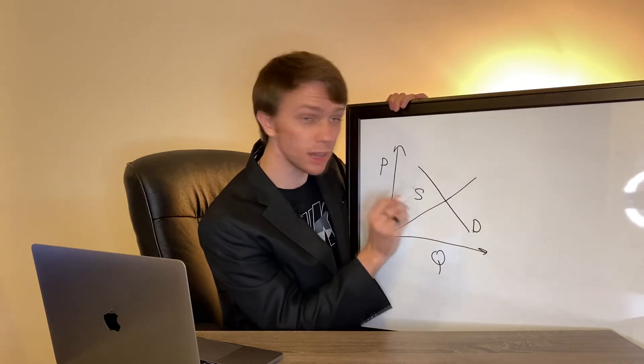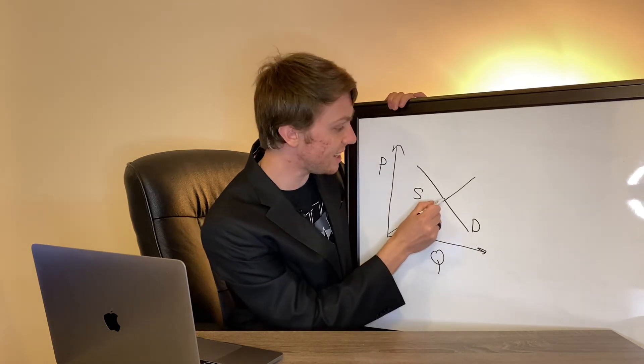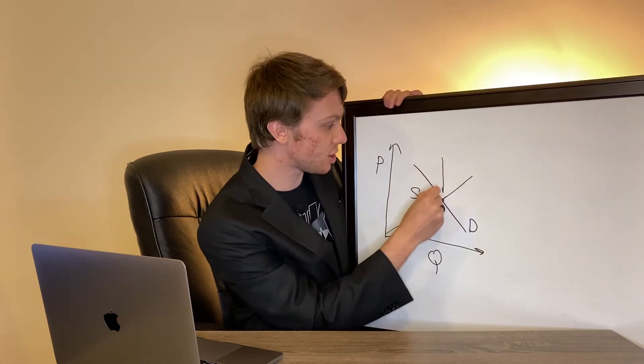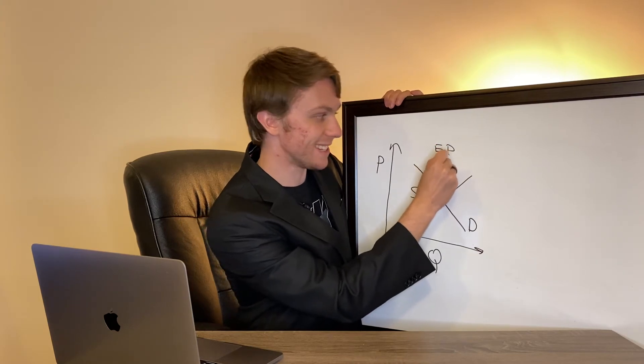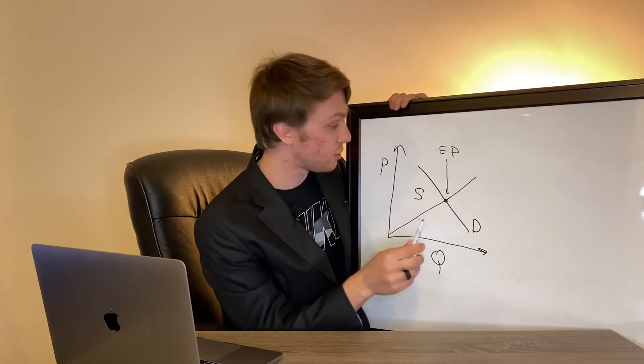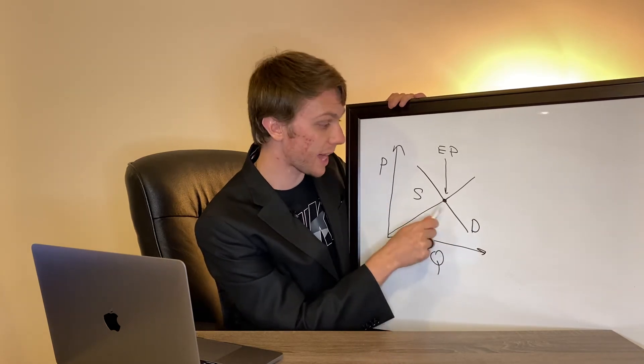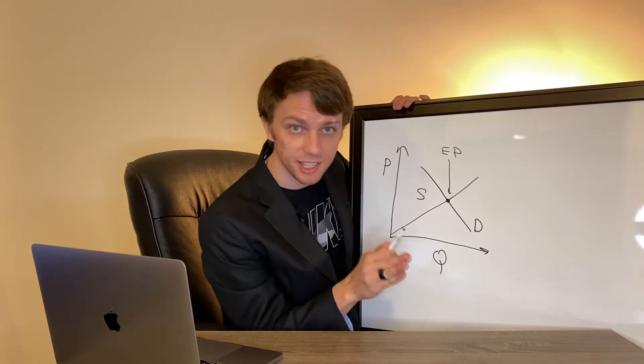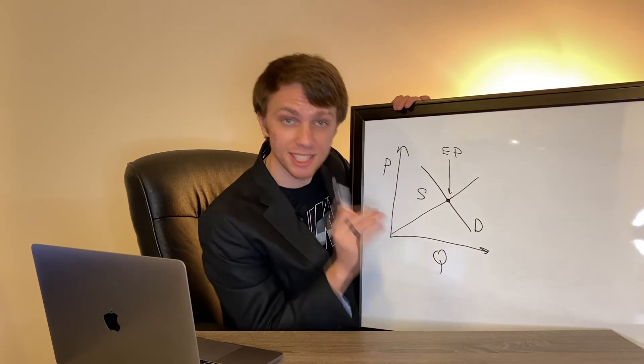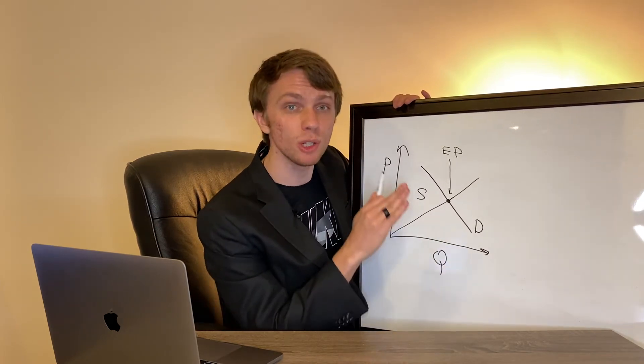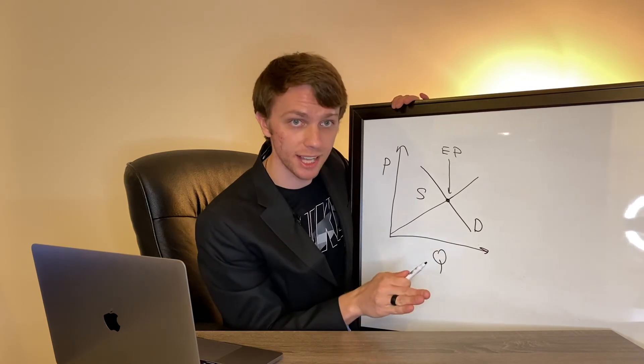And here we have one more interesting thing, which is the intersection between these two curves. And this intersection is called equilibrium price, which is basically the perfect price for the producer and for the customer. At this price, the supply and demand matches, meaning that the producer will sell a specific amount of items at a specific price. And this will not create either overproduction or deficit.